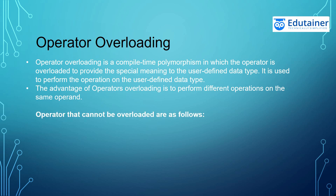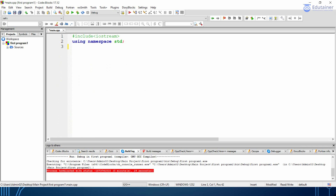There are some specific operators that you cannot overload: the scope resolution operator, which is used when you have to define a function outside the class; the sizeof function; and the member selector. These are some of the operators that you have to keep in mind. Quickly, let's move to code blocks so that we can also have an example of operator overloading.